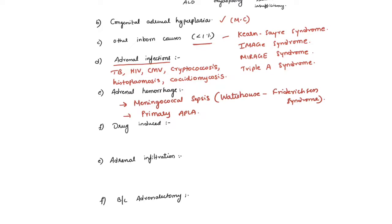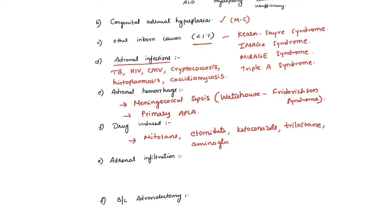Leading to acute adrenal insufficiency. Drugs that can cause adrenal insufficiency are anti-adrenergic drugs: mitotane, etomidate, ketoconazole, trilostane, and aminoglutethimide. Note that mitotane, etomidate, and ketoconazole are also used in the treatment of Cushing syndrome, especially in severe cases before surgery to stabilize the patient.